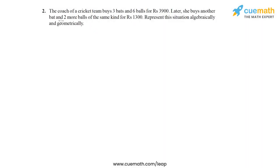Question 2 of this exercise says the coach of a cricket team buys three bats and six balls for 3,900 rupees. Later she buys another bat and two more balls of the same kind for 1,300 rupees. Represent this situation algebraically and geometrically.